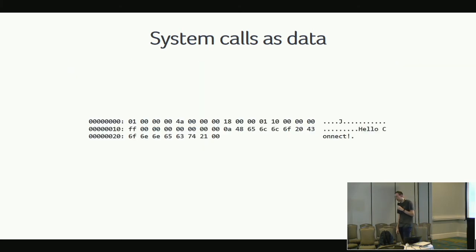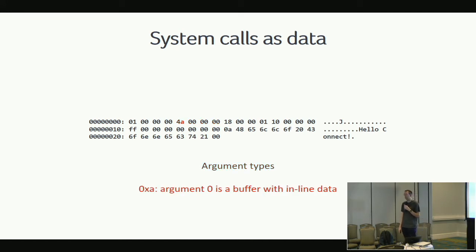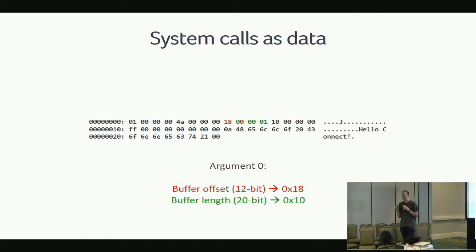Going back to the example of invoking the logging system call: we start by specifying which system call to invoke, then a 32-bit value where each nibble specifies the type of argument that will follow. In this case we have two arguments of different types. The first argument is a buffer specification, and the second argument is a normal integer value — the length of the data to be printed. Inside the subsequent 32-bit values is encoded where to find the buffer data and how much of the data from the format is to be copied into the buffer.